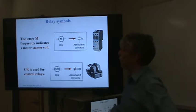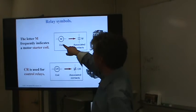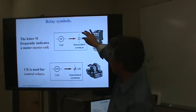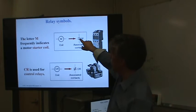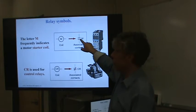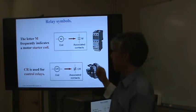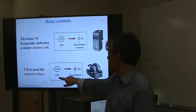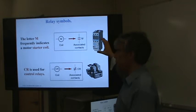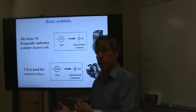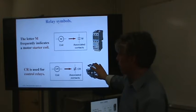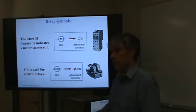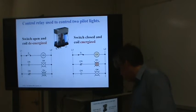Here's a symbol for a relay. We've got a coil labeled M — that M is for motor starter coil — and then a contact associated with it. There's an understood magnetic bridge between the coil and the switch so that when the coil turns on, the switch changes state. CR might be labeled for a control relay. A motor starter is a relay but it's a special type for actually driving a motor, whereas a control relay is more often used for signals. There are many different types of relays.